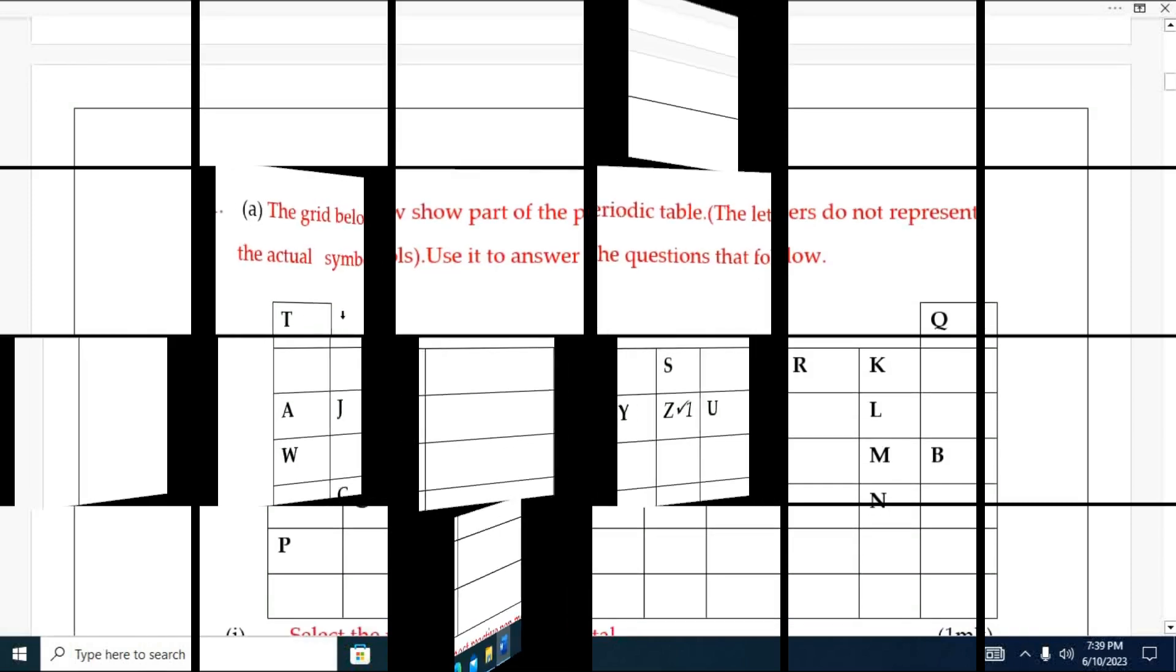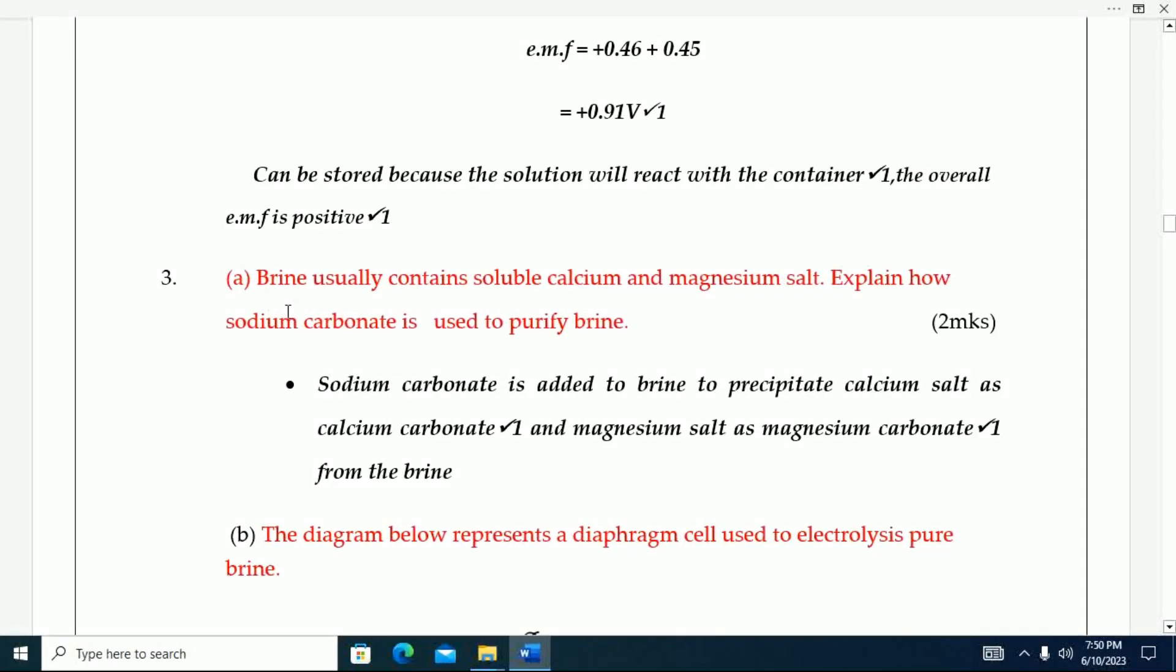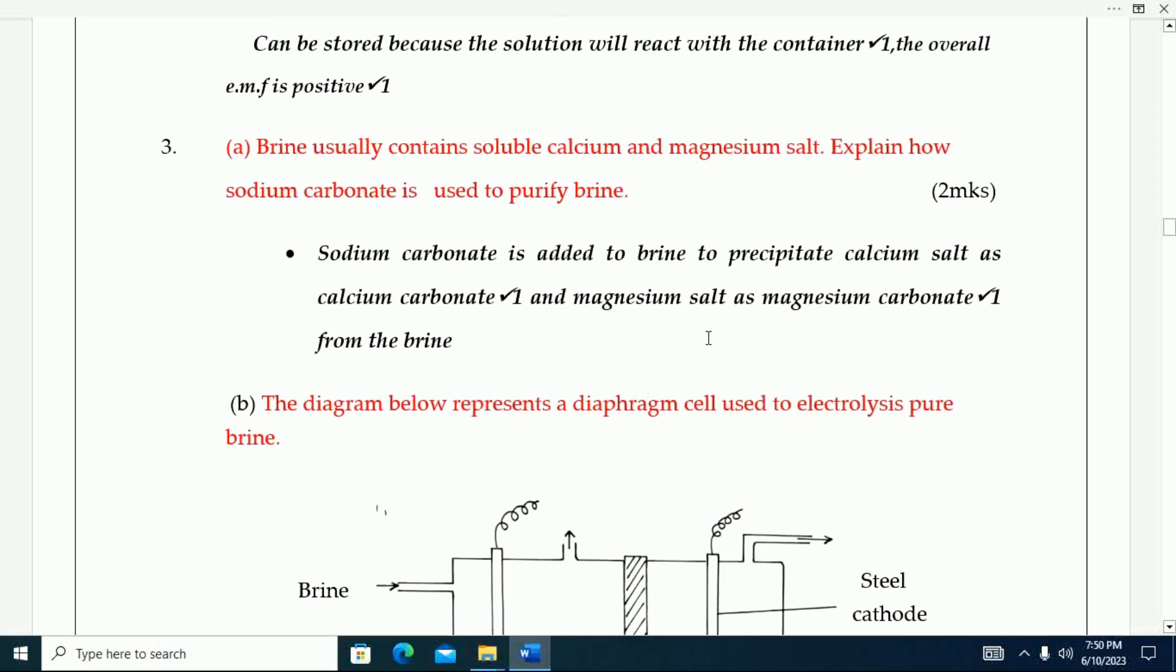Question one: Brine usually contains soluble calcium and magnesium salts. Explain how sodium carbonate is used to purify brine. Sodium carbonate is added to brine to precipitate calcium salt as calcium carbonate and magnesium salt as magnesium carbonate from the brine.